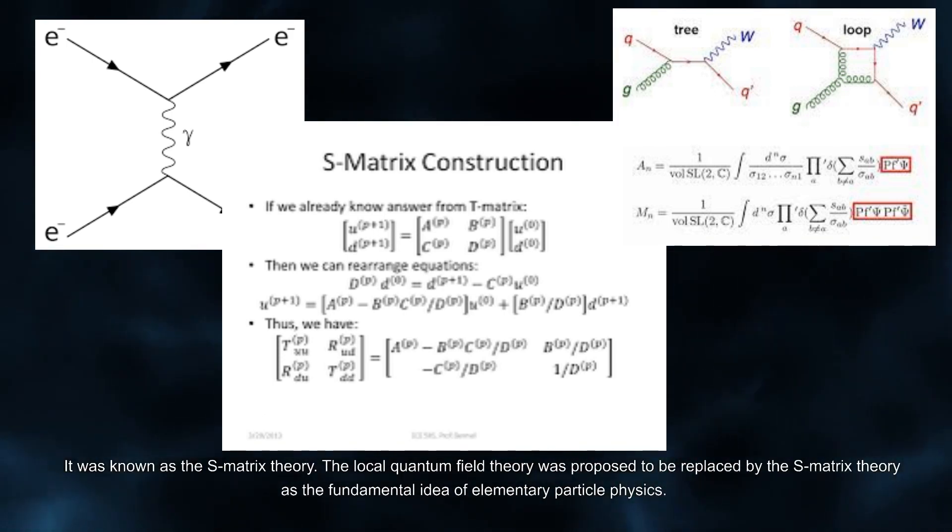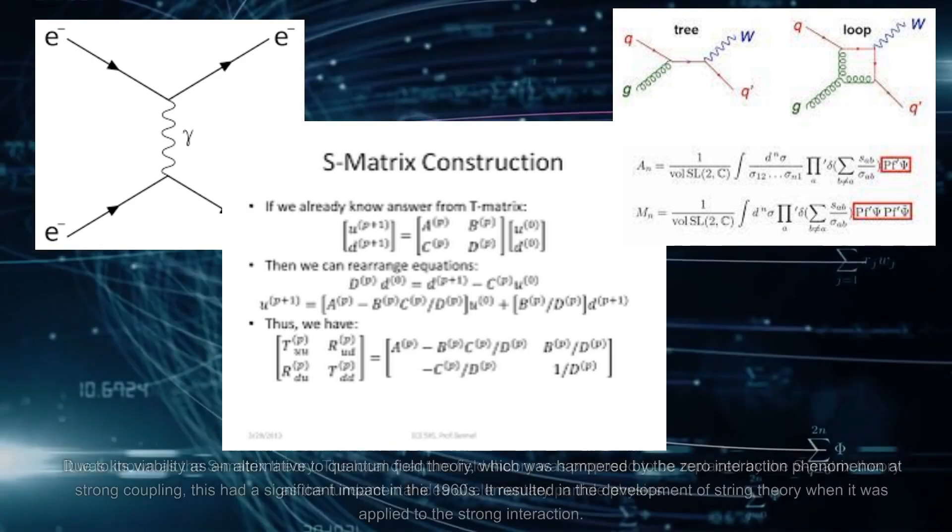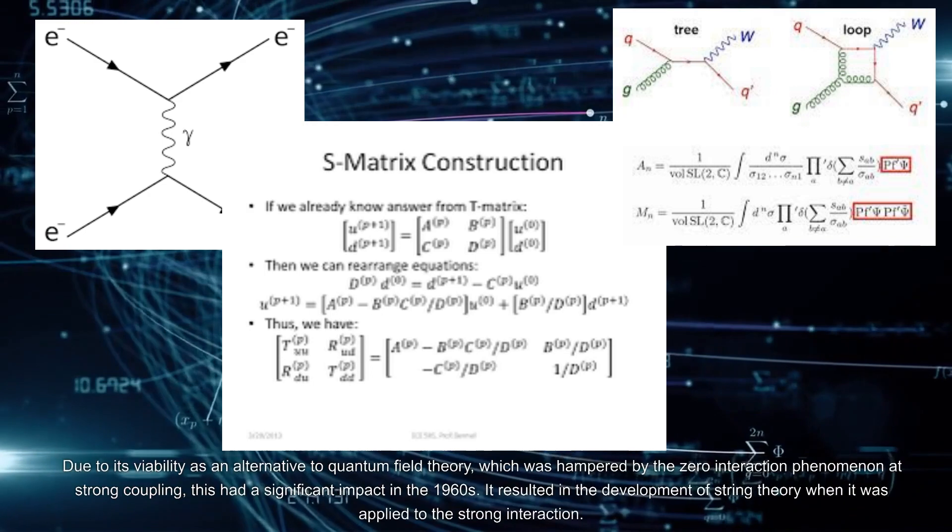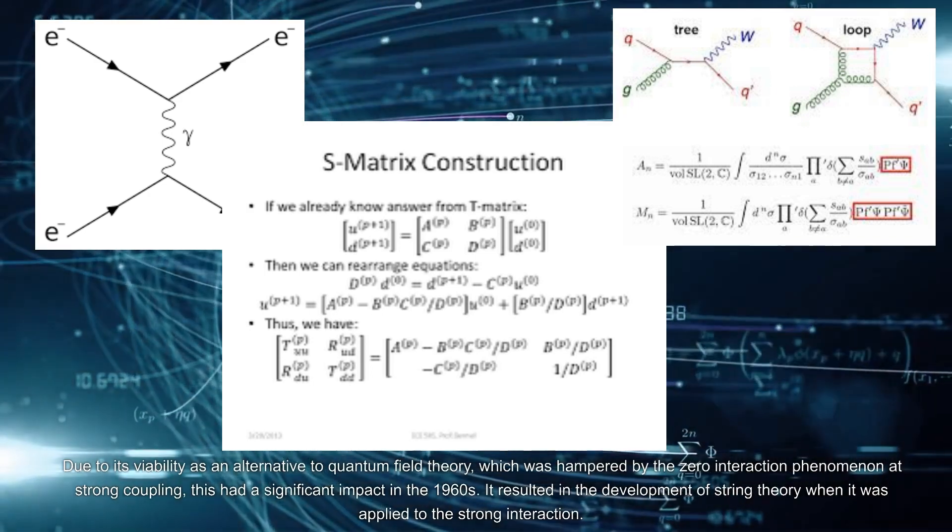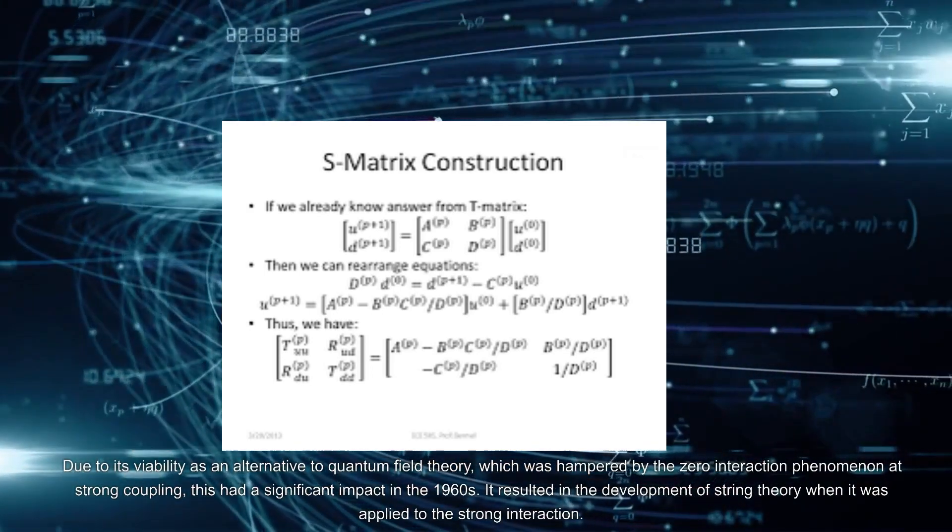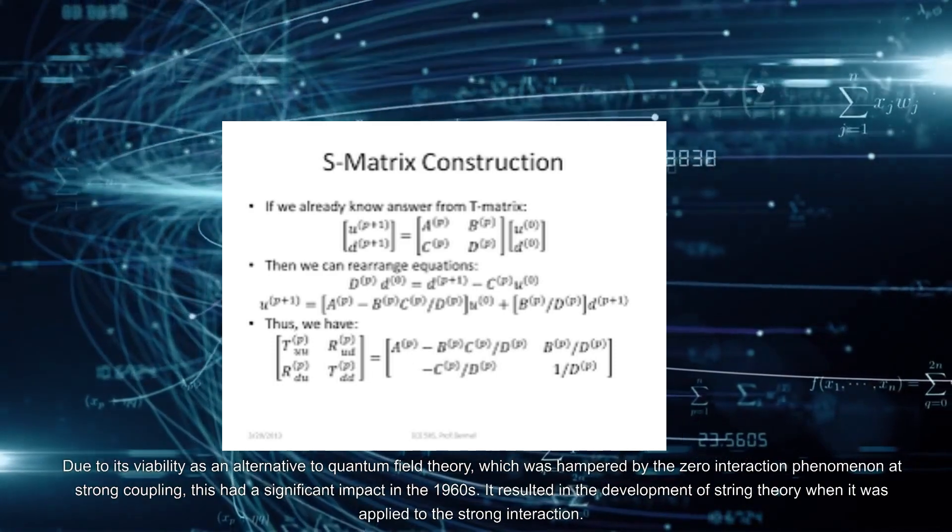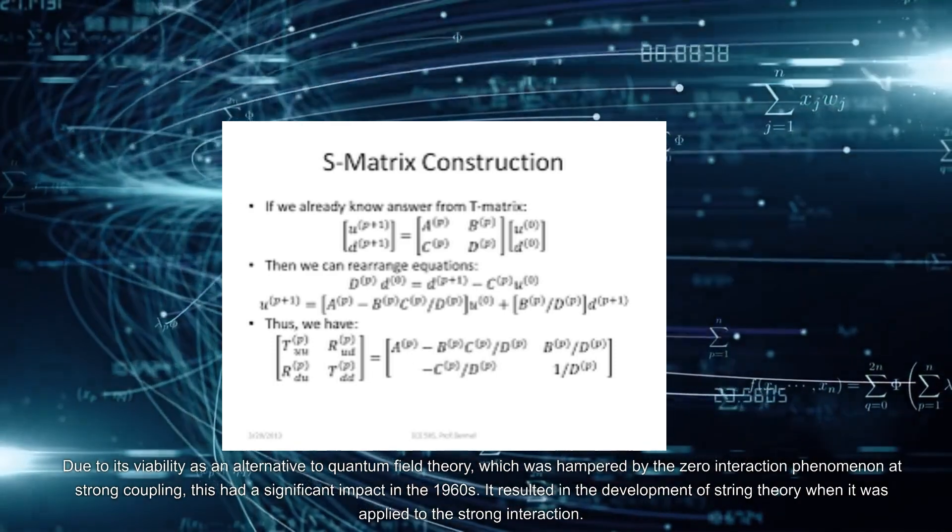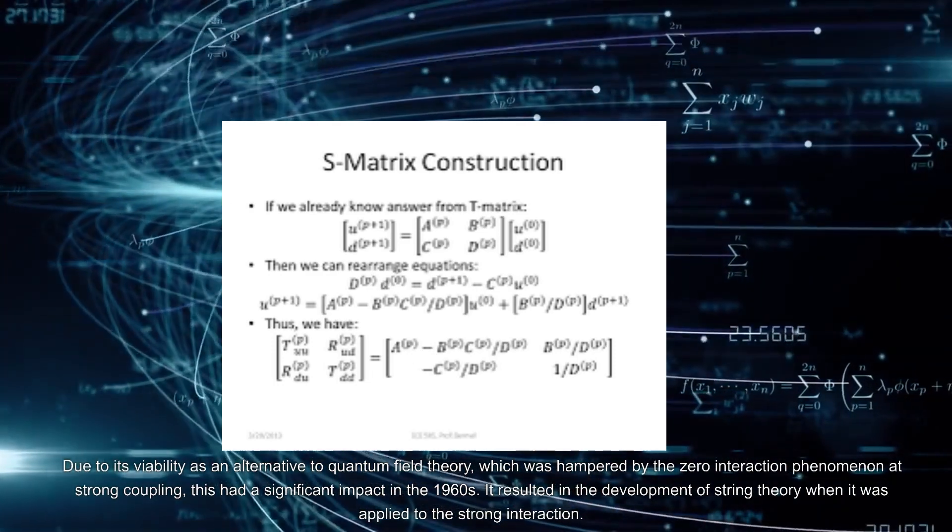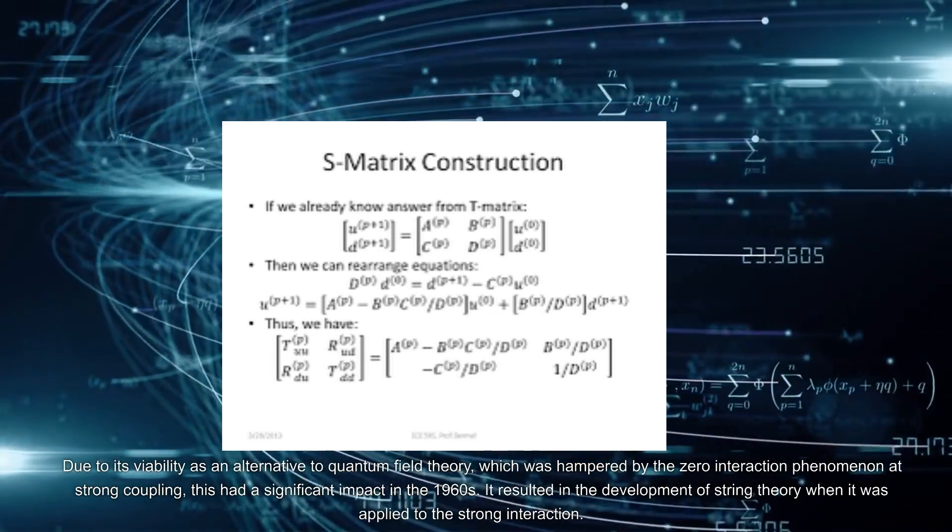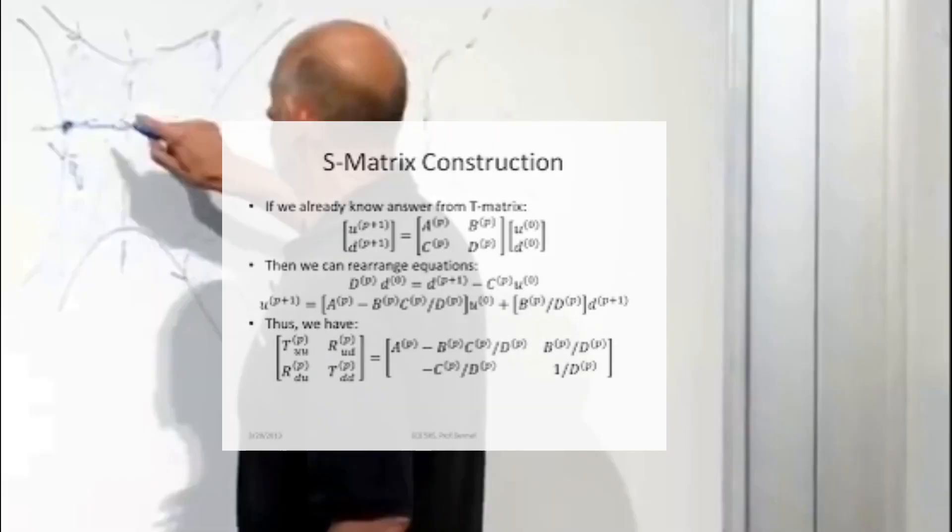The local quantum field theory was proposed to be replaced by the S-matrix theory as the fundamental idea of elementary particle physics due to its viability as an alternative to quantum field theory, which was hampered by the zero interaction phenomenon at strong coupling. This had a significant impact in the 1960s.